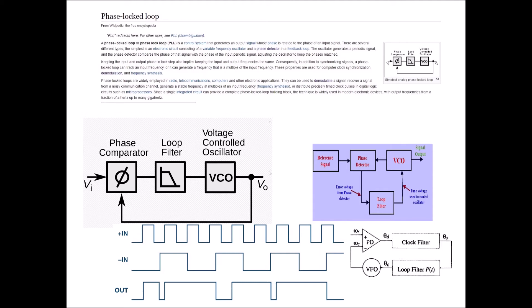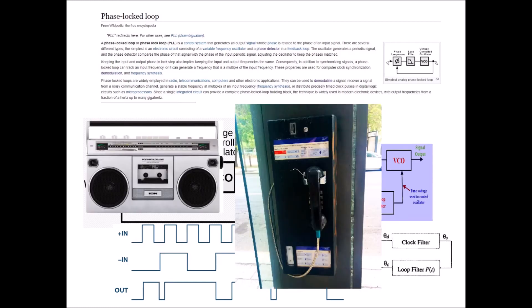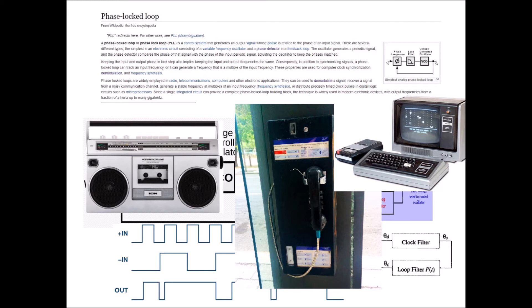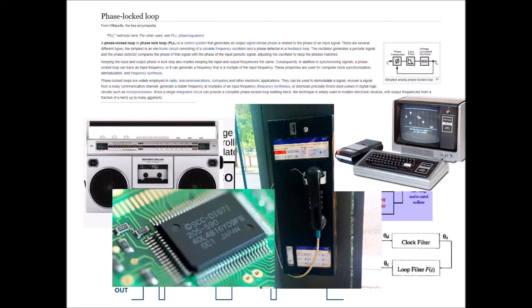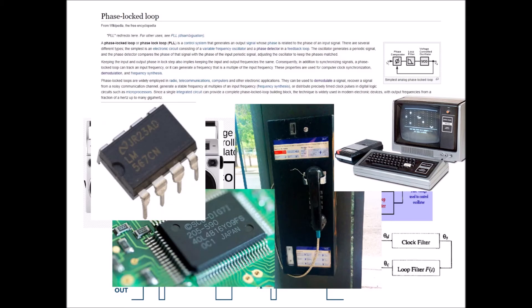These properties are used for computer clock synchronization, demodulation, and frequency synthesis. Phase locked loops are widely employed in radio, telecommunications, computers, and other electronic appliances. They can be used to demodulate a signal, recover a signal from a noisy communication channel, generate a stable frequency at multiples of an input frequency (frequency synthesis), or distribute precisely timed clock pulses in digital logic circuits such as microprocessors. Since a single integrated circuit can provide a complete phase locked loop building block, the technique is widely used in modern electronic devices with output frequencies from a fraction of a hertz up to many gigahertz.